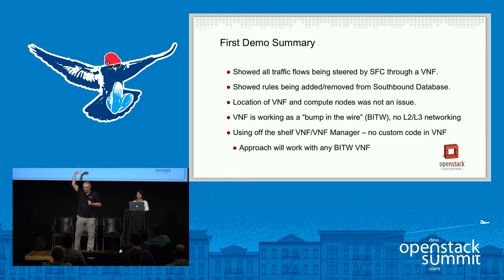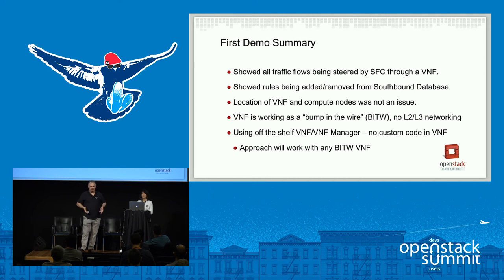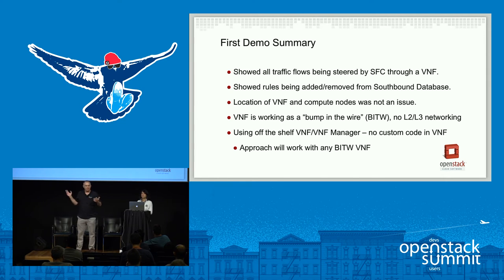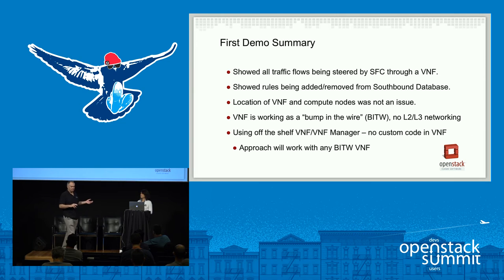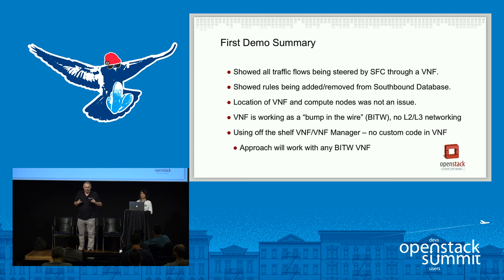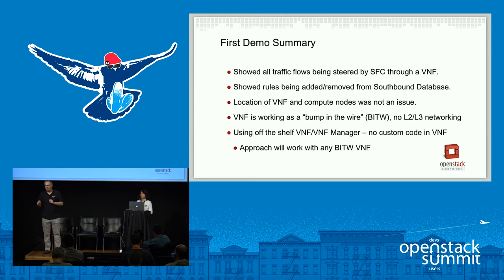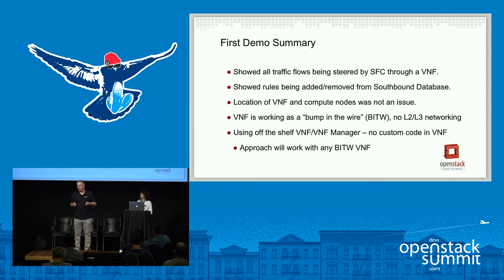We didn't have to specify the location of the VNF or which compute node it was on — OVN takes care of that. OVN says you create a logical model, and the southbound database controller connects the ports together. The VNF here is working as a bump in the wire, which is important for scaling because there's no networking in the VNF. That means when the VNF moves around, you don't have to change VLANs, routing tables, etc. You can imagine load balancing a bunch of VNFs together; if you don't have any networking it's really easy, you can just spray packets across the interfaces.